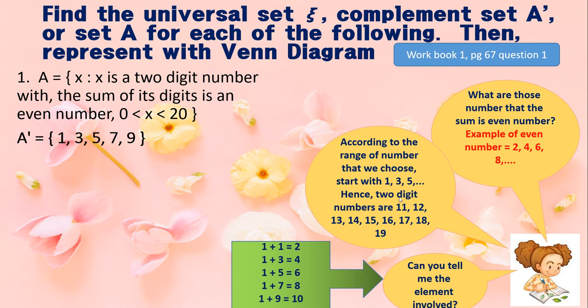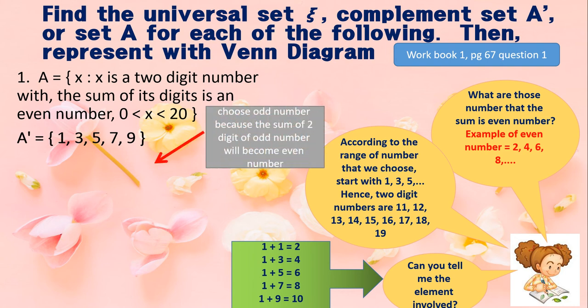From the two-digit numbers, I will sum up their digits to get even numbers. For example: 1+1=2, 1+3=4, 1+5=6, and so on. After that, I choose my universal set. Before drawing the Venn diagram, I need to know the universal set, which includes both set A and the complement of A.